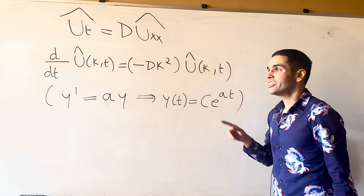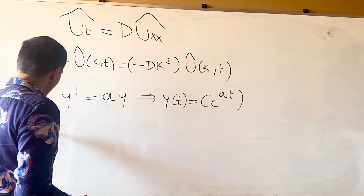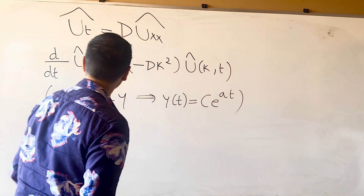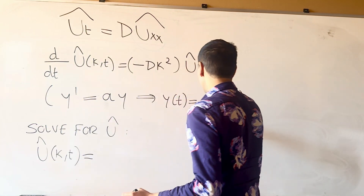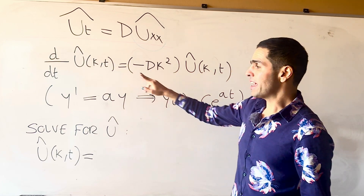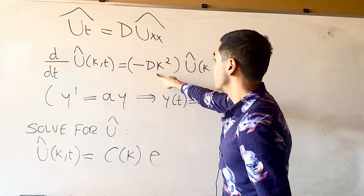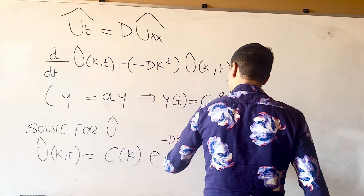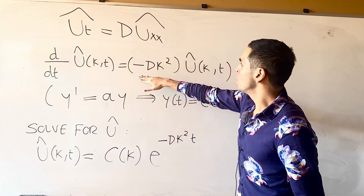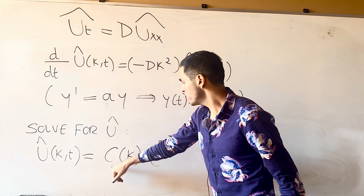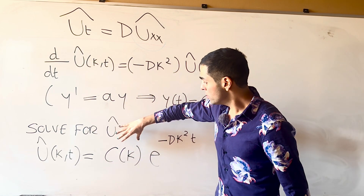Using this, we can solve for û. What we get is û(κ, t) = C(κ)·e^(-dκ²t), where C is constant with respect to t, so it's a function of κ. To recap: this comes from û' = -dκ²·û, so the solution is C(κ)·e^(-dκ²t).